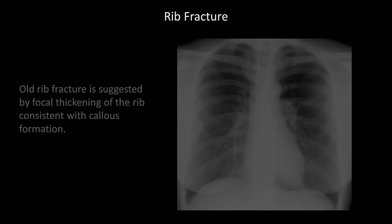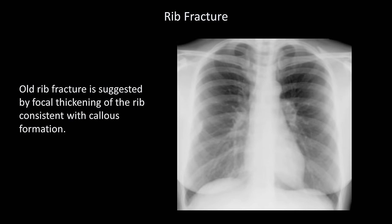Both of those fractures were relatively acute. However, sometimes old fractures can be identified as well. This is suggested by focal thickening of the rib consistent with callus formation. This patient has a probable old rib fracture of a right posterior rib. Be careful, though, because these can be mistaken for sclerotic bone lesions, and vice versa.